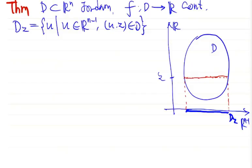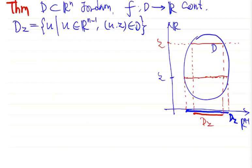Then you project this red segment into R^(n-1) and you get Dz. For a different z — say the red z here — the segment is here, and you project this into lower dimension to obtain the red Dz. So we have such a Dz for each z.